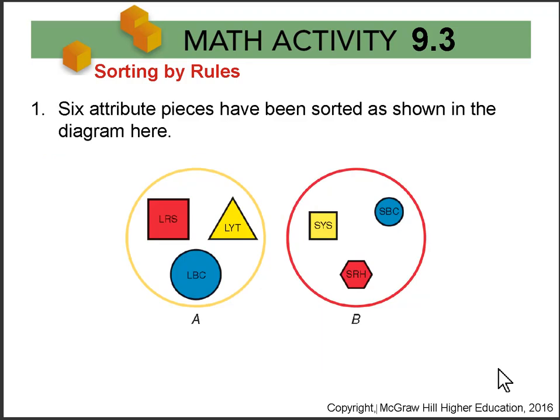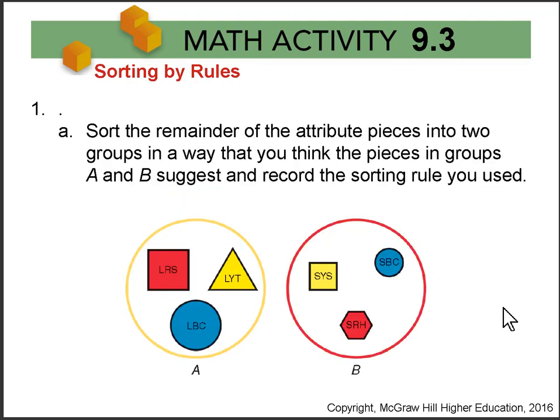In Question 1, six pieces have been sorted into two groups, A and B. On the left there are three large pieces in A, and on the right there are three small pieces in B with different shapes and colors.